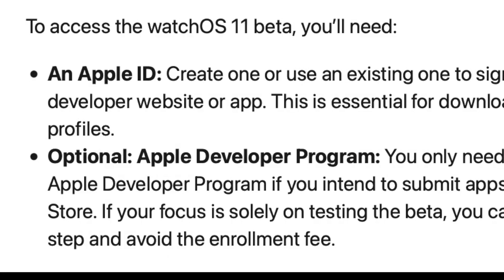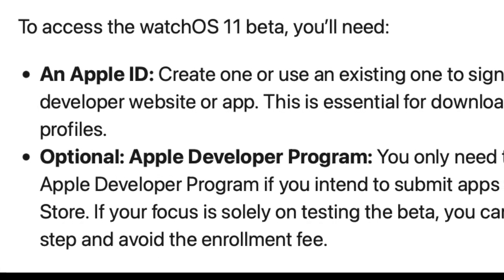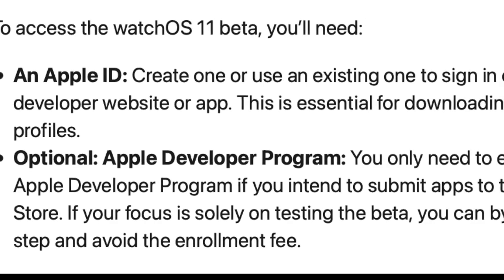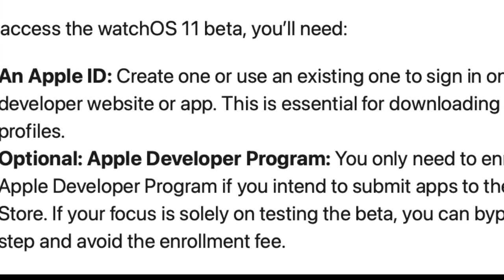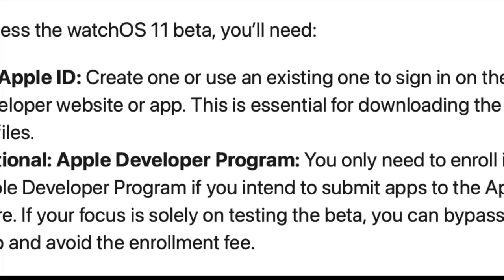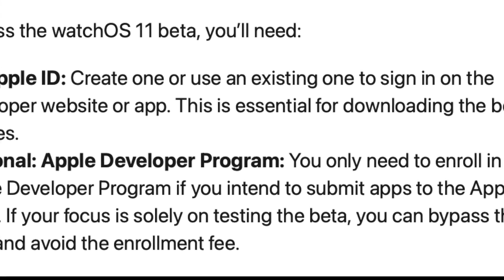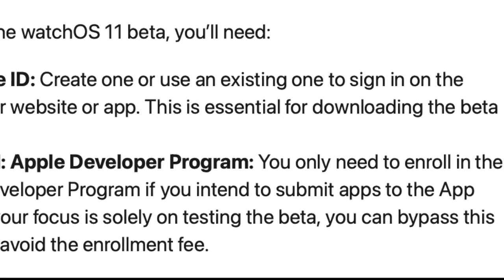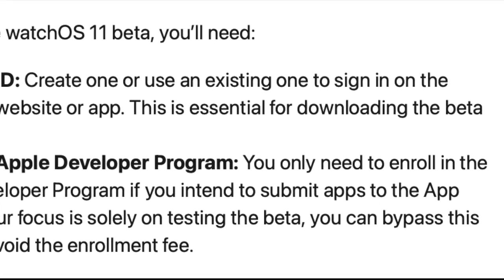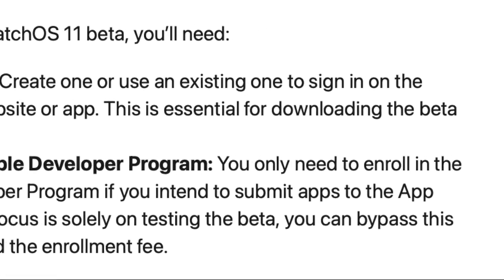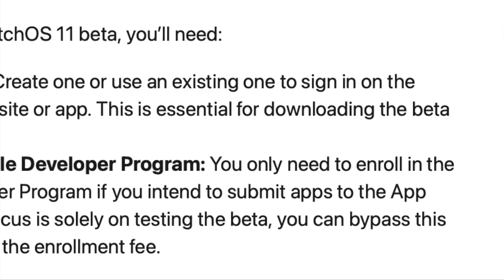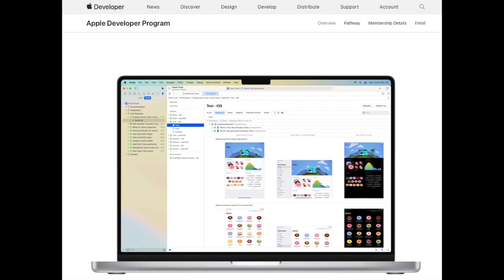To access the watchOS 11 beta, you'll need an Apple ID. You probably have one already, so just use that username and password to sign in. Optionally, you can also enroll in the Apple development program, but you don't really need to do this, and you can bypass this step to avoid the enrollment fee.